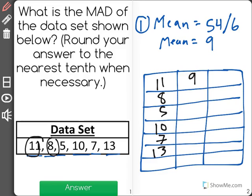The next step is I'm just going to put the mean, 9, in the middle. So the left column will be the data, the middle column will be the mean, and the right column will be the deviation.